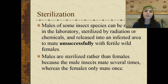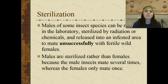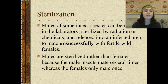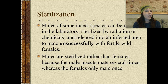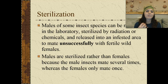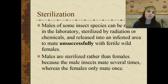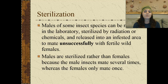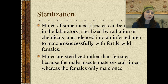We can also employ the use of sterilization. Males of some insect species can actually be raised in the laboratory, sterilized by radiation or chemicals, and then released into an infested area to mate unsuccessfully with fertile wild females. Basically the reproduction takes place, but we don't produce offspring. The males are sterilized rather than females because male insects mate several times, whereas female insects only mate once.